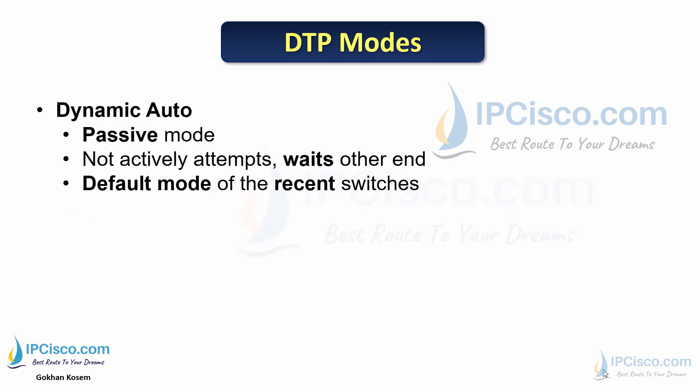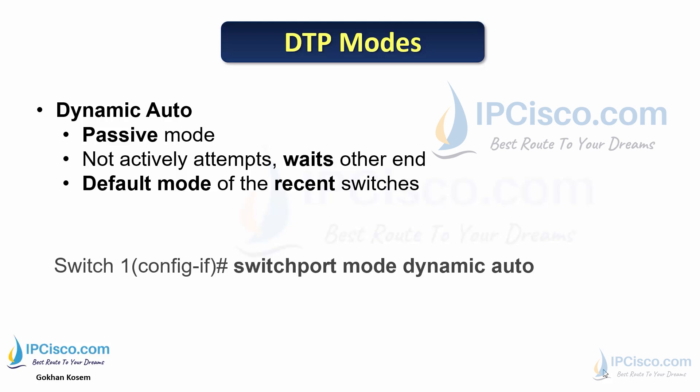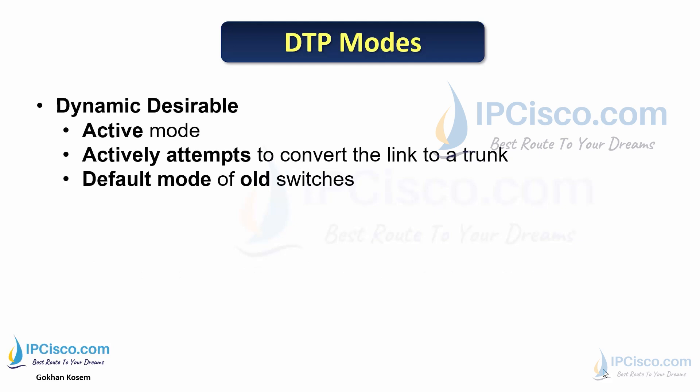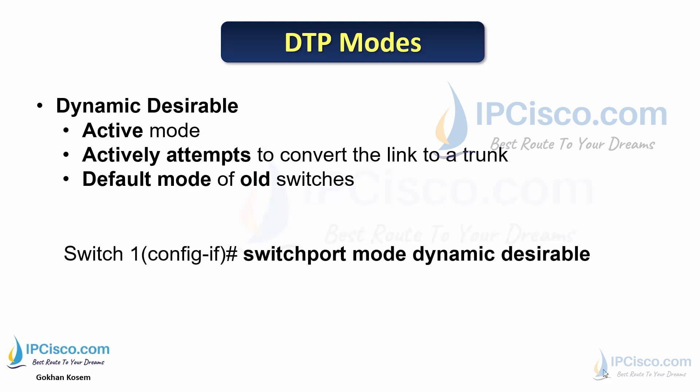Dynamic auto is the passive mode of DTP. It does not actively attempt to build a trunk; instead it waits for the other end. This is the default mode on recent switches, configured with the 'switchport mode dynamic auto' command. Dynamic desirable is the active mode of DTP — it actively converts the link to a trunk. This is the default mode for old switches, configured with the 'switchport mode dynamic desirable' command.